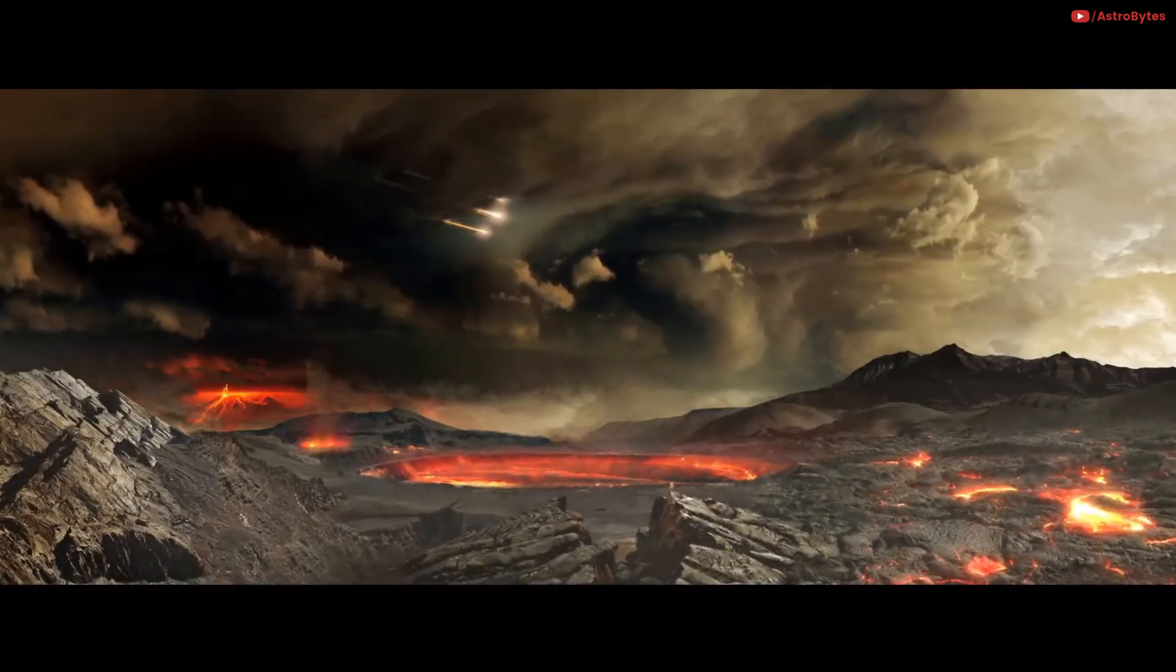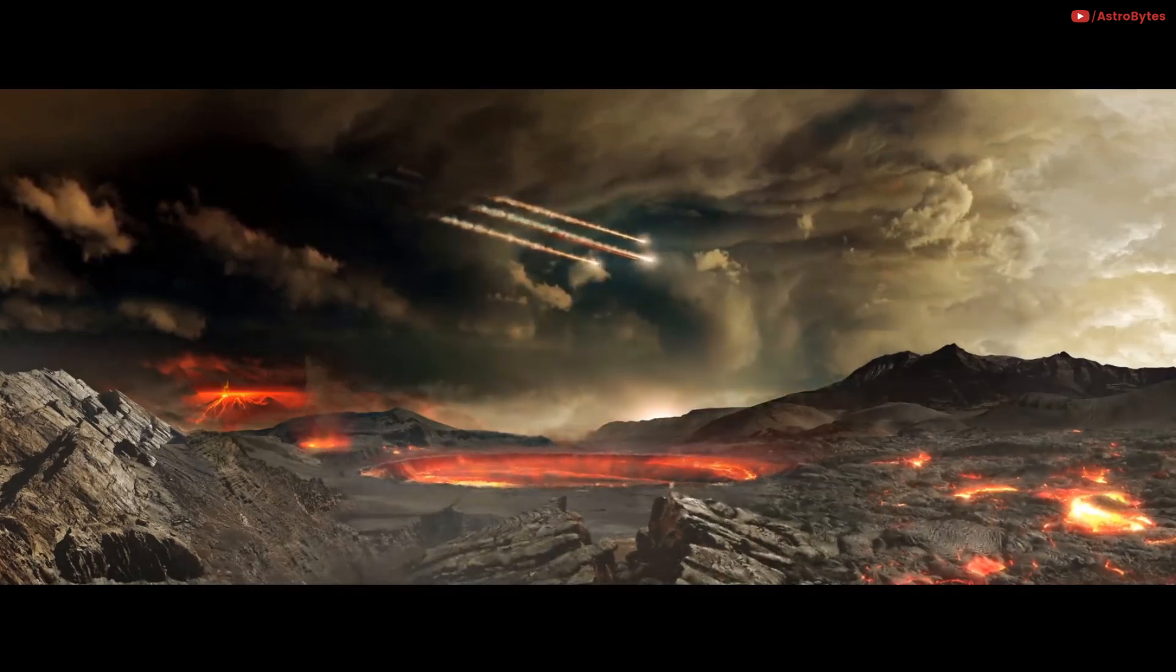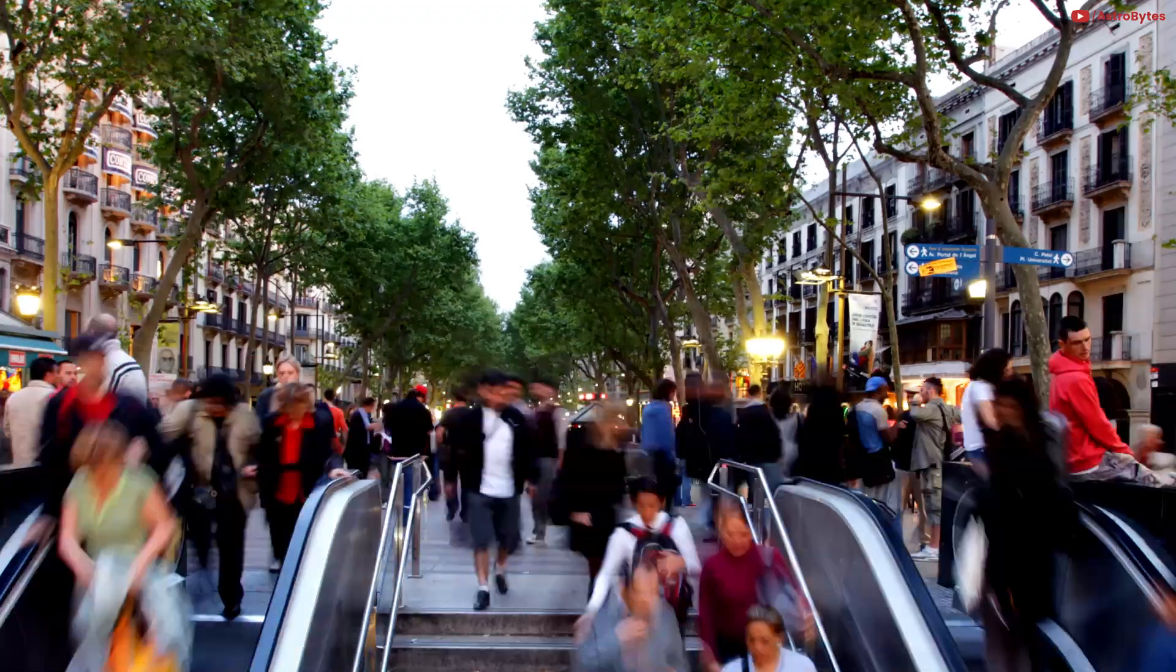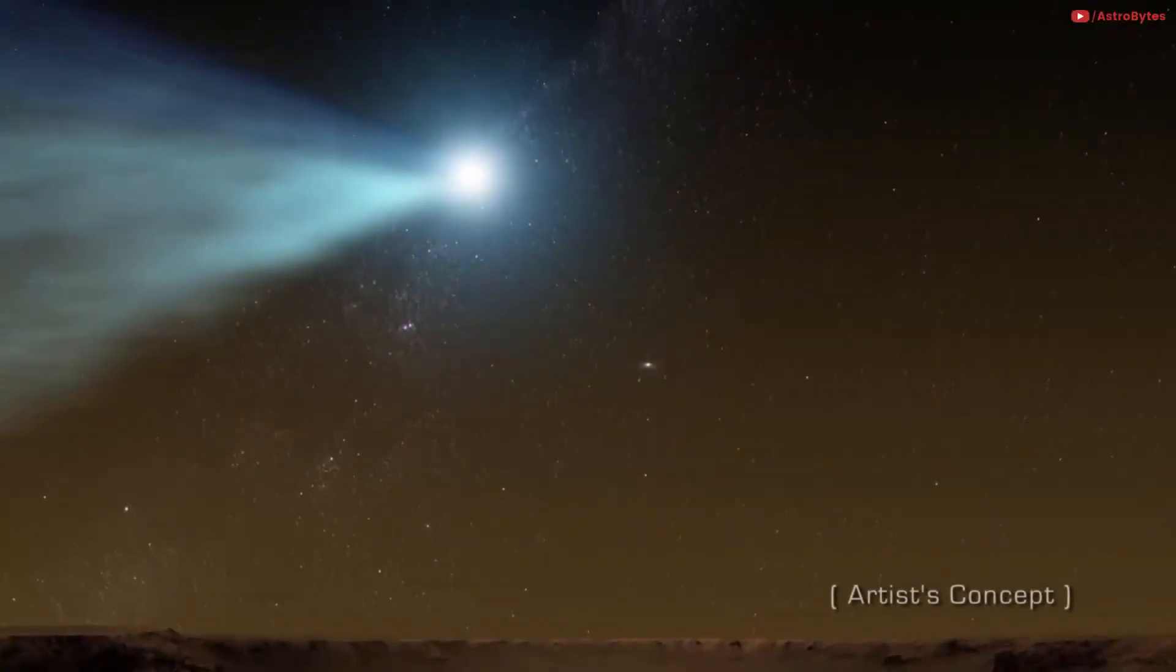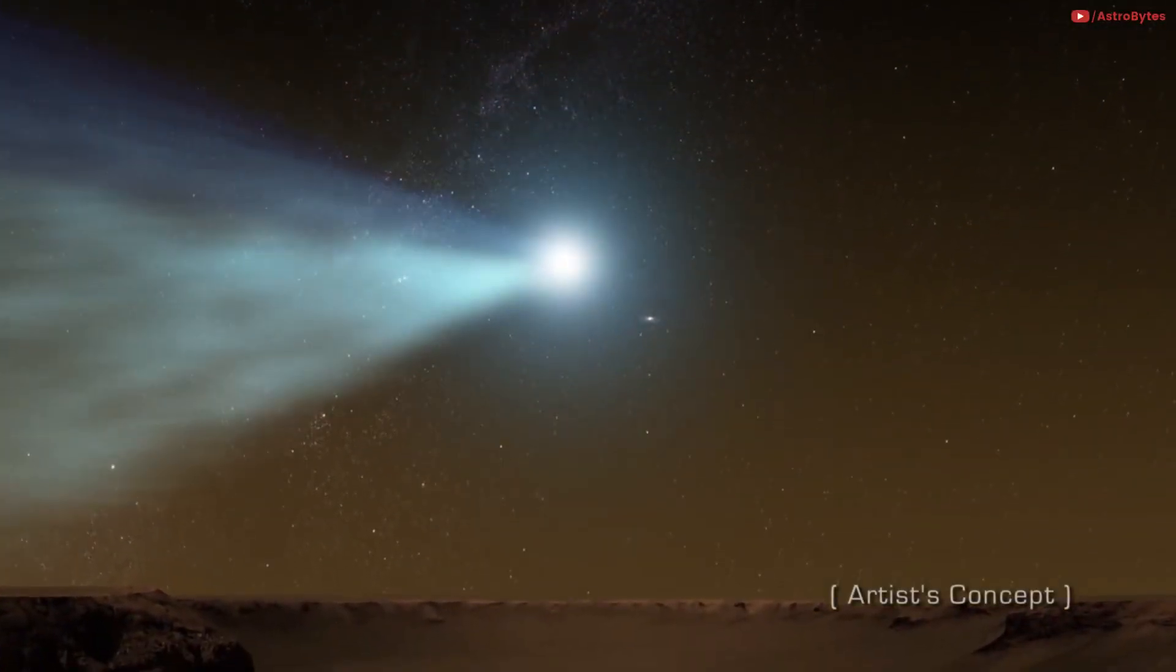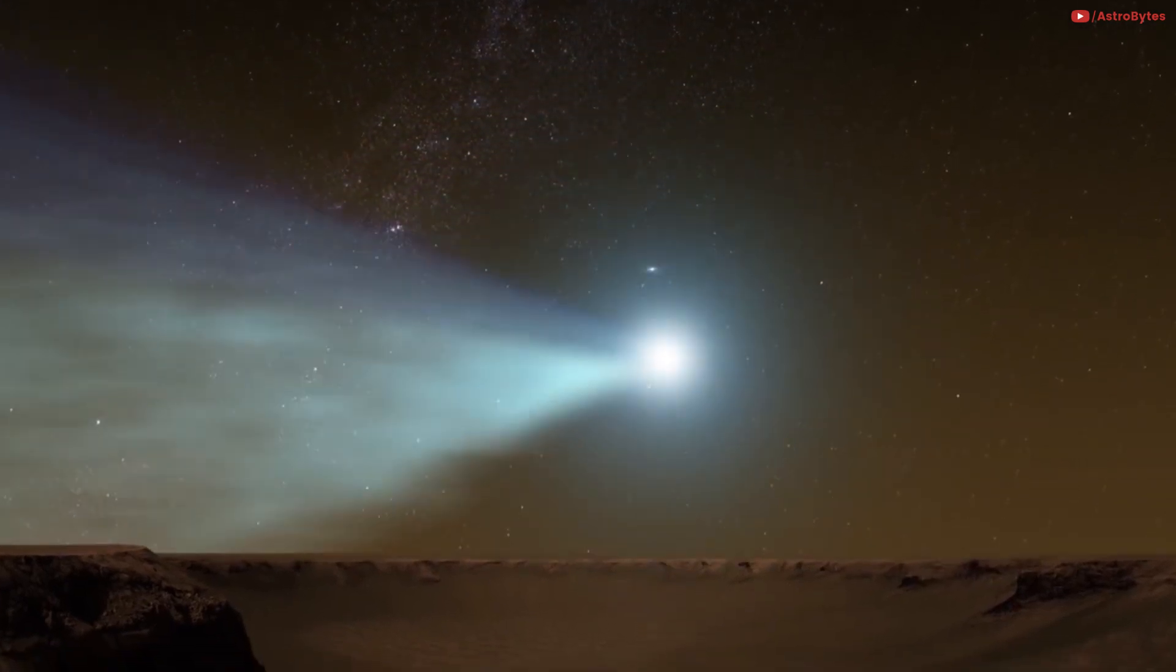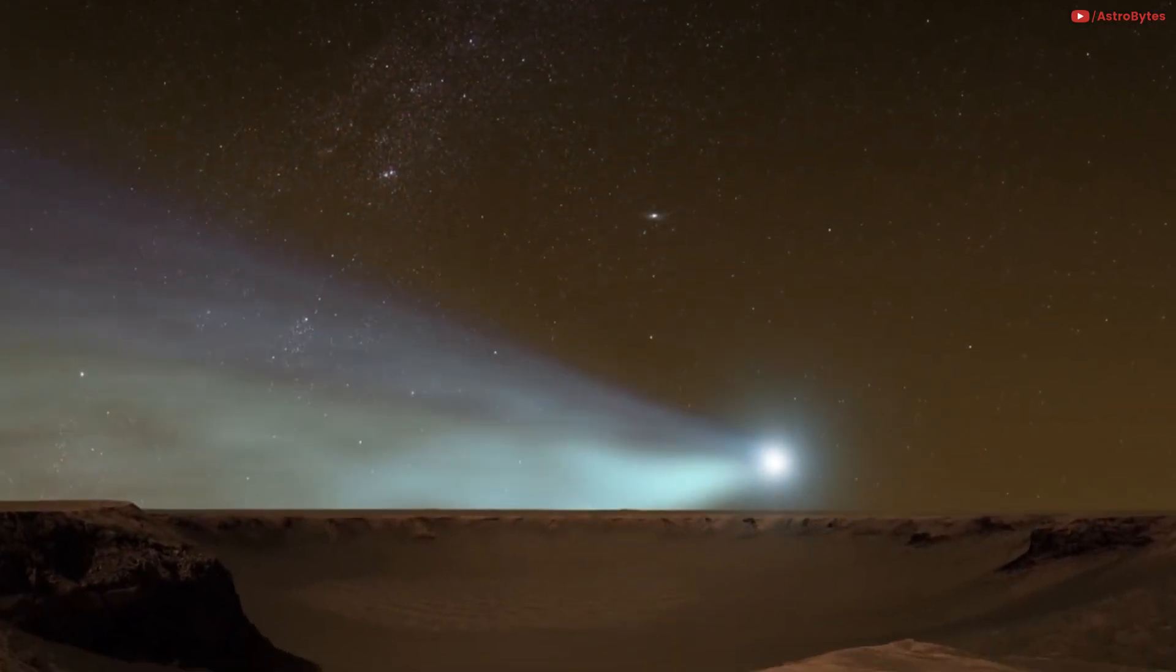All life was single-celled at that point, and only the most heat-tolerant microbes made it. Today's larger life forms almost certainly wouldn't make it. Air temperatures could reach more than 900 degrees Fahrenheit for several weeks if we suffered a similar asteroid strike.